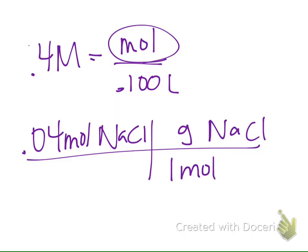What's our molar mass of salt? 23? No, that's sodium. 58.5. Okay, that's our molar mass of sodium chloride. Salt is sodium and chloride, so 58.5 is our molar mass there. To find grams, we multiply across the top and divide by the bottom. And we get 2.34 grams of salt. I thought you would say that — it just happens that I have 2.34 grams of salt already measured.